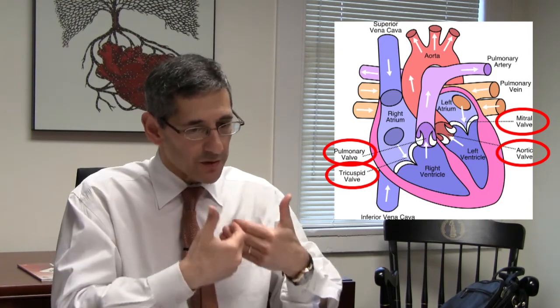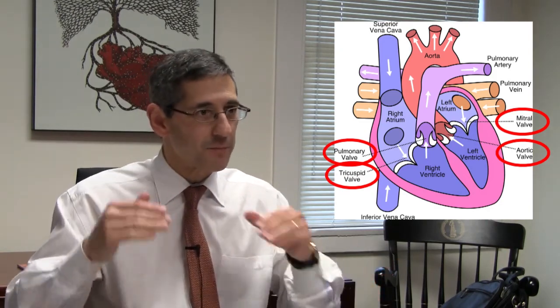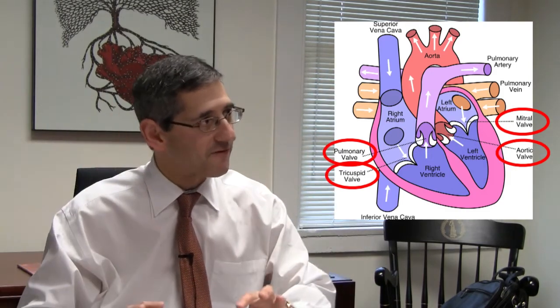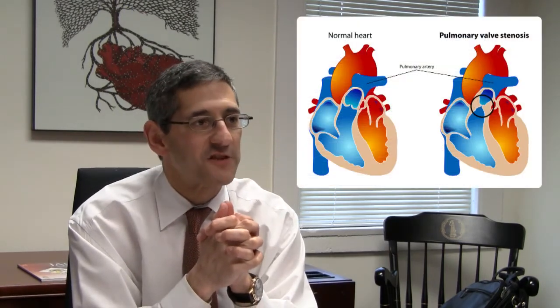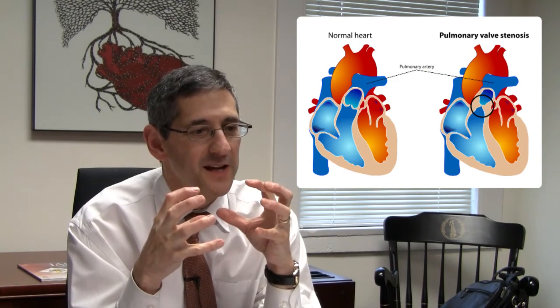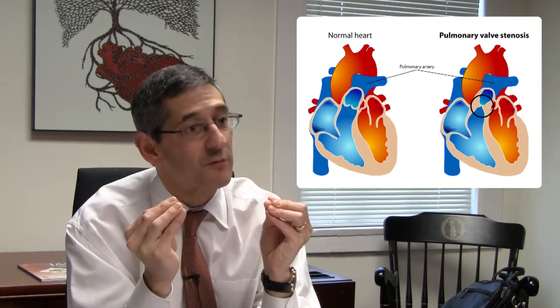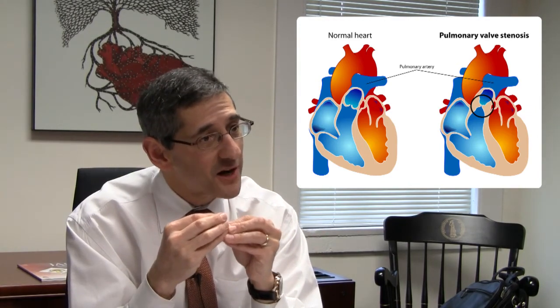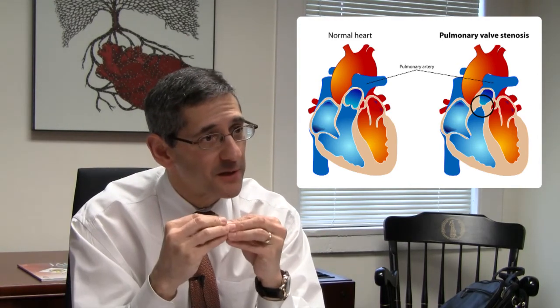When the heart relaxes, you want the mitral and tricuspid valves to open, while the aortic and pulmonic valves close to prevent backflow. One major pathology is valve stenosis: valves become calcified and thickened, failing to open fully and presenting resistance to blood flow. One way to measure how severe a stenotic valve is, is by measuring the pressure gradient across it. For any given flow rate, the tighter the valve, the higher the pressure gradient.